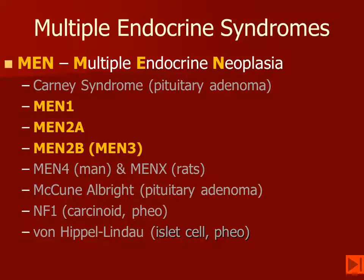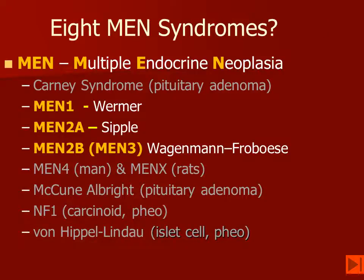We're going to concentrate on MEN1, 2A, and 2B — 2B in the past has been called MEN3. These diseases also have eponyms, all named after dead white European men. MEN1 is Wormer's syndrome, 2A is Sippel's syndrome, and 2B is Wagenman-Frabos disease.